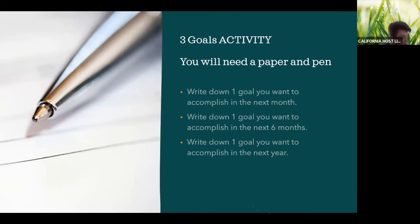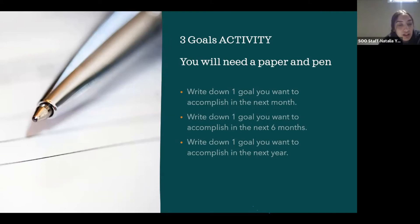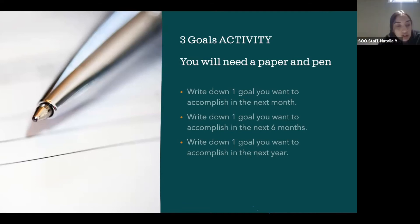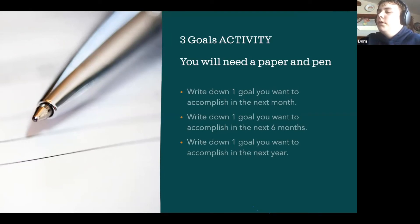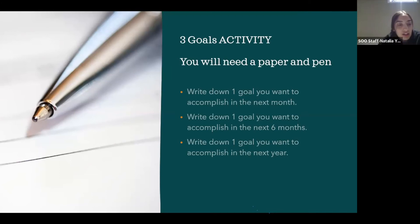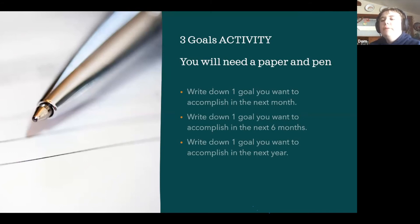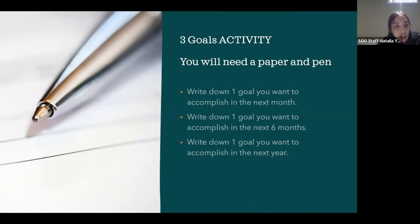Dom: My goal is to beat The Legend of Zelda: Majora's Mask in one year. Natalia: That is a great goal — is that a video game? Dom: Yeah, I just haven't been playing it very often and I couldn't beat the moon. Natalia: That is a fantastic goal, thank you Dom!